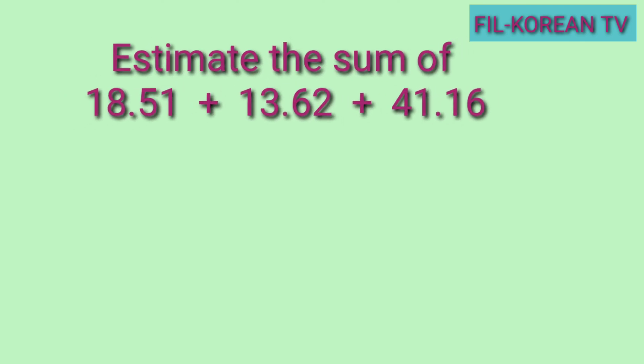Next problem: estimate the sum of 18 and 51 hundredths plus 13 and 62 hundredths plus 41 and 16 hundredths. Ang una natin gagawin ay i-round off natin ang bawat number to the nearest whole number. Unahin natin itong 18 and 51 hundredths. Ang nasa one's place ay 8. Ang susunod sa kanya sa kanan ay 5. Dahil 5 ito, ang gagawin natin ay round up. Dadagdagan natin ng 1 itong 8. Kaya magiging 19.